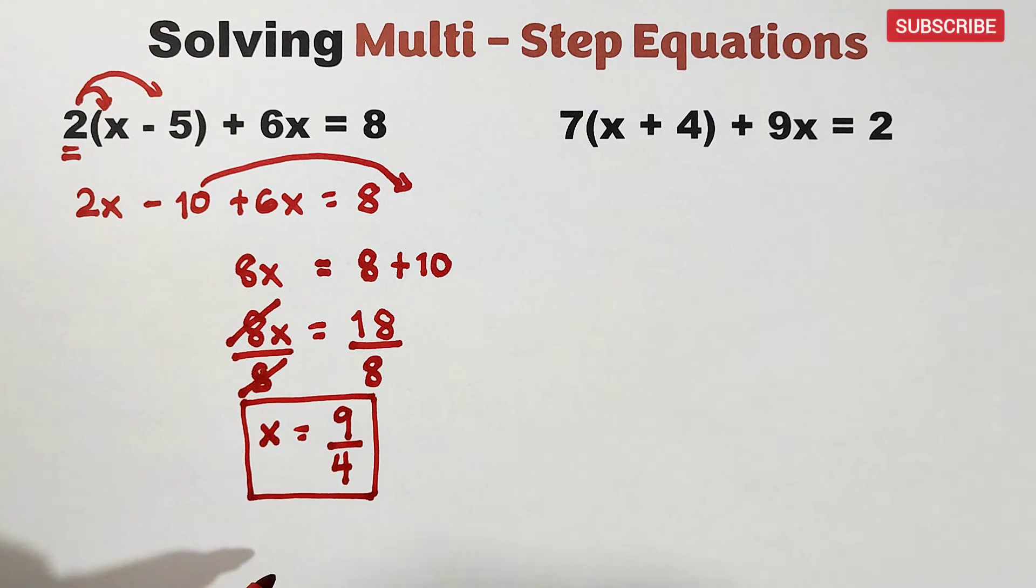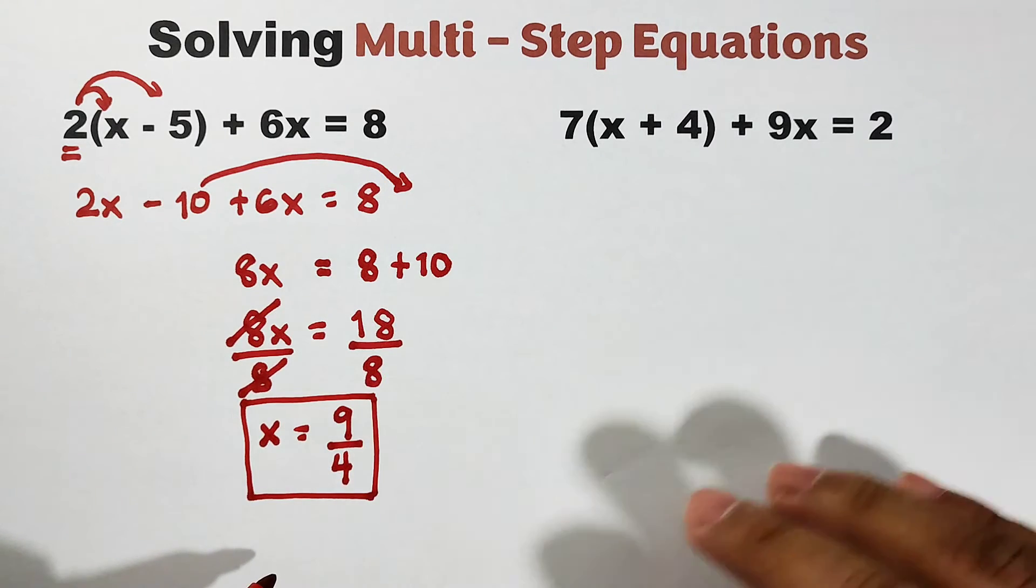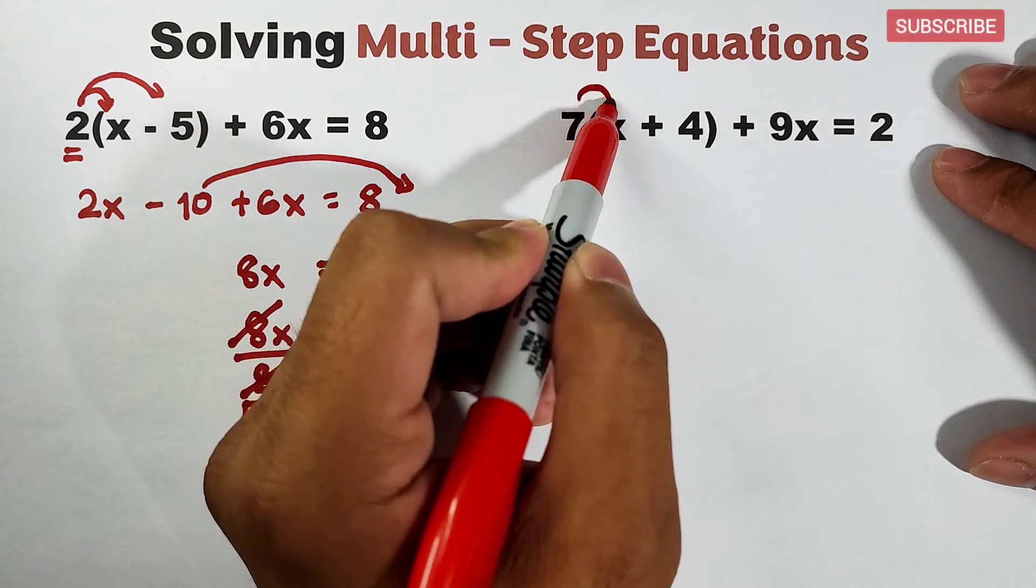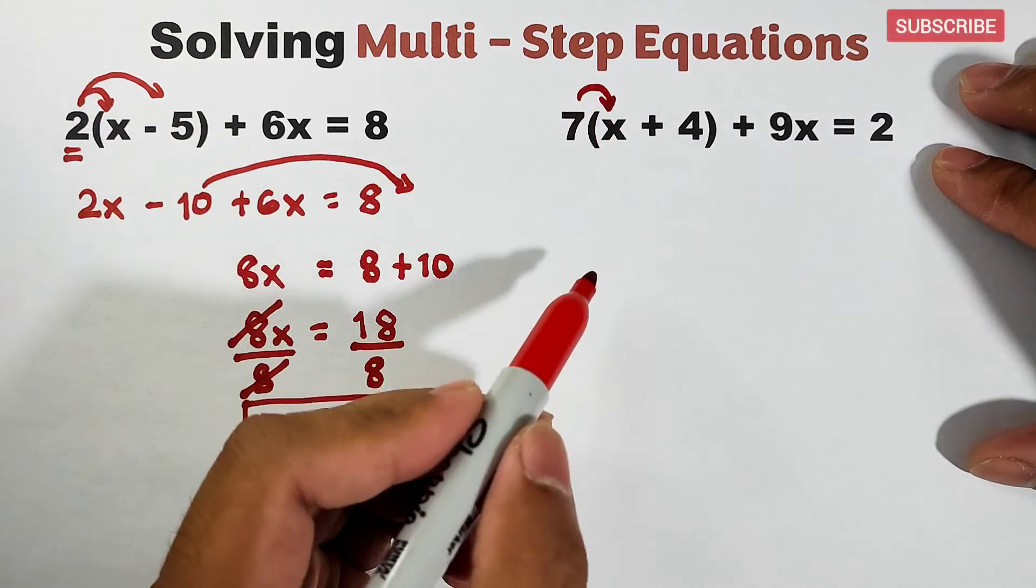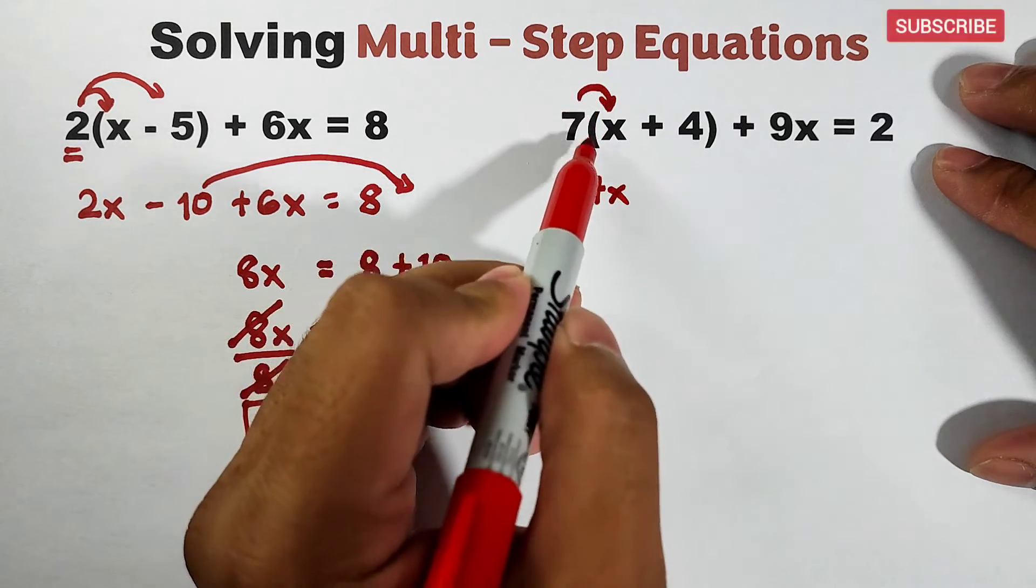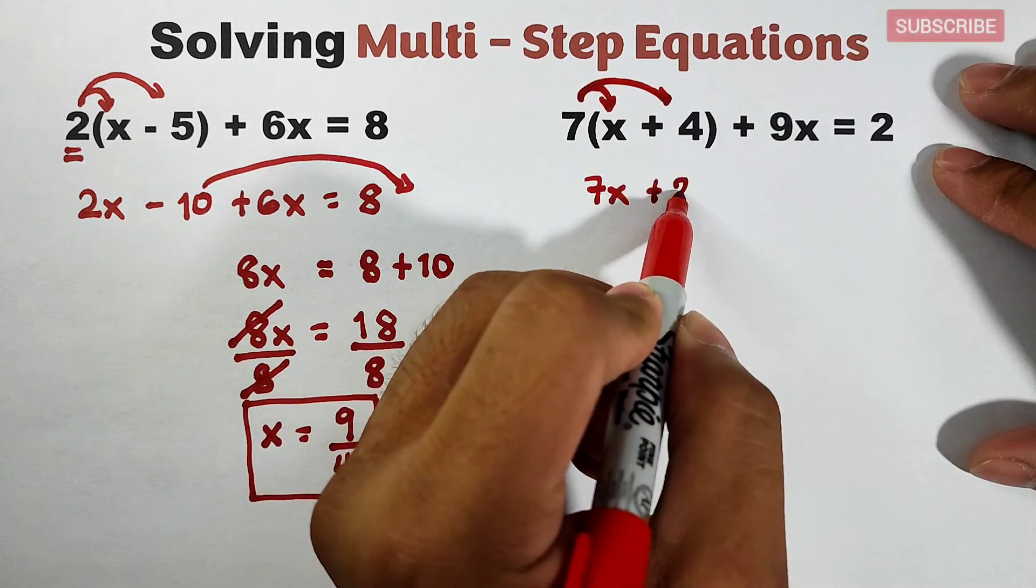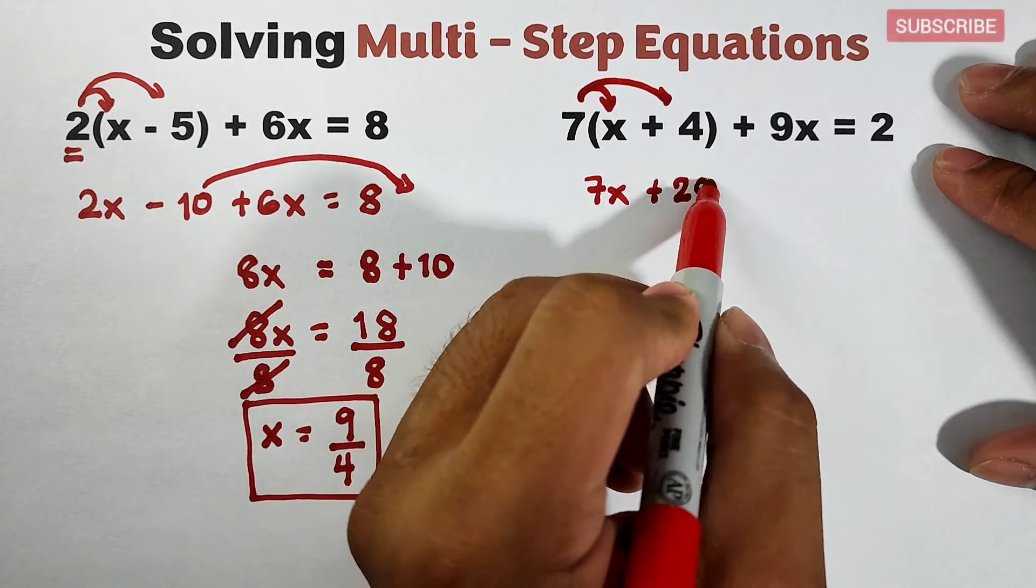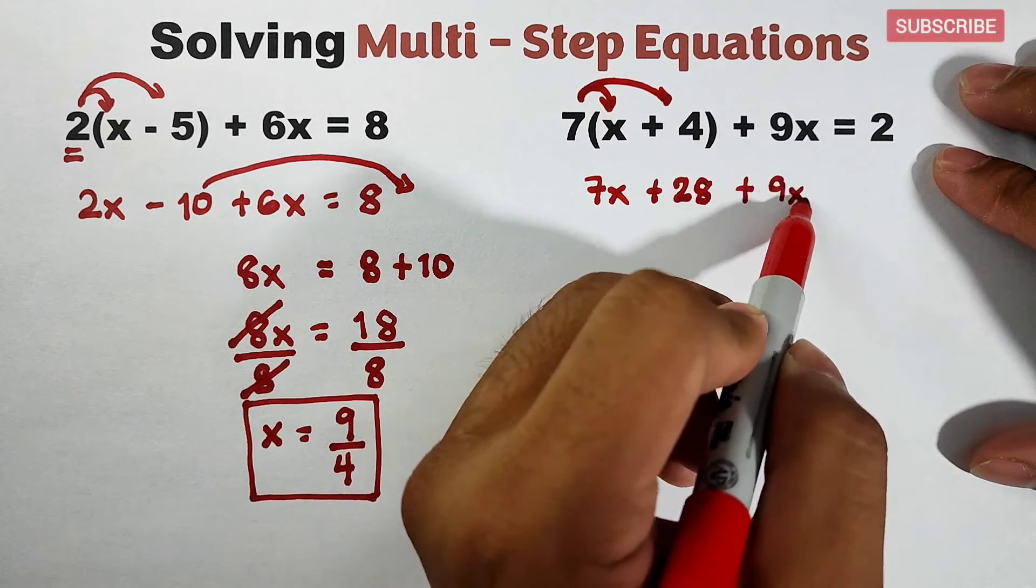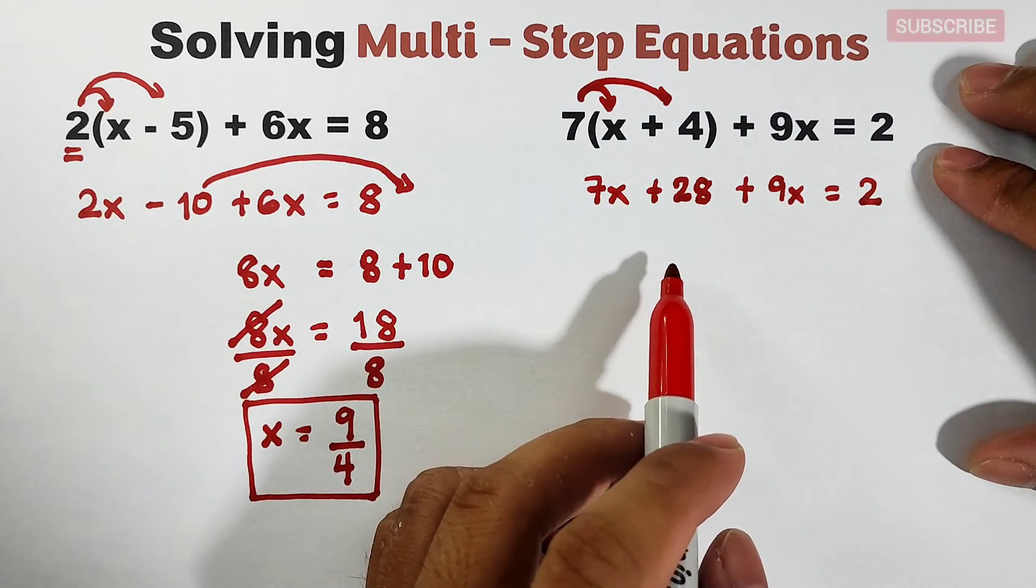Now let us proceed with item number 2. Same process: we need to simplify first this parenthesis by distributive property. So we will multiply 7 and x: 7 times x is 7x. Then 7 times 4, that is plus 28. Then copy plus 9x equals 2.